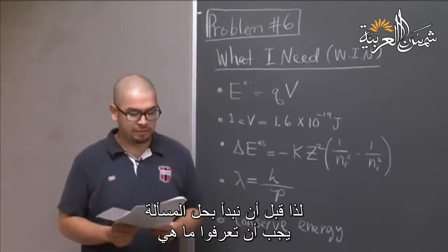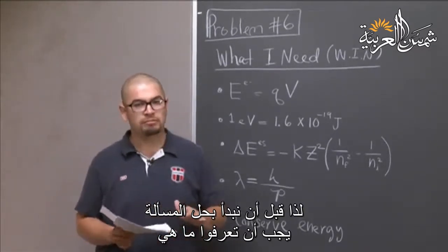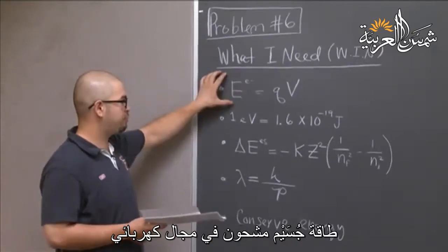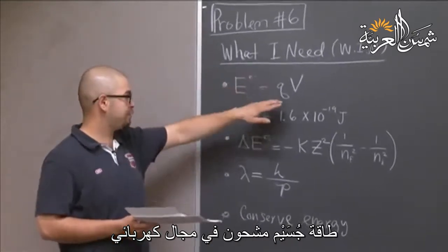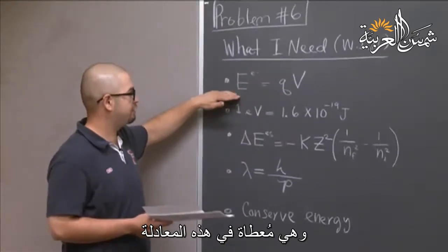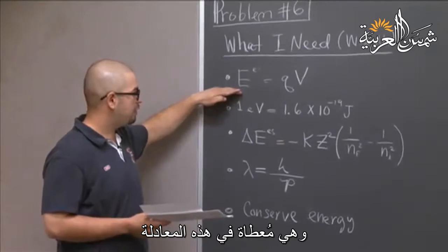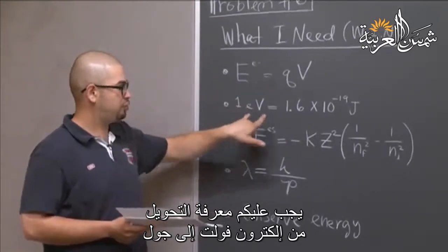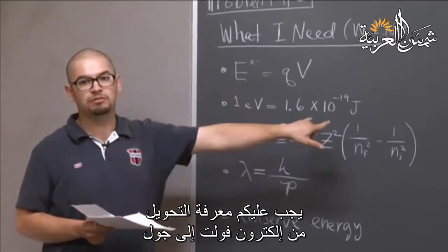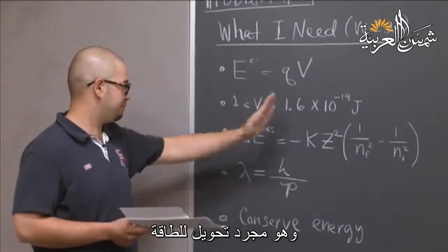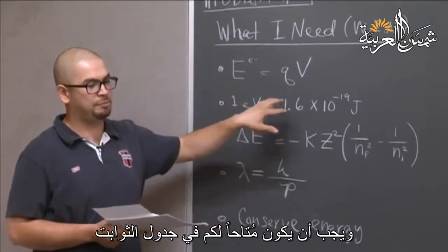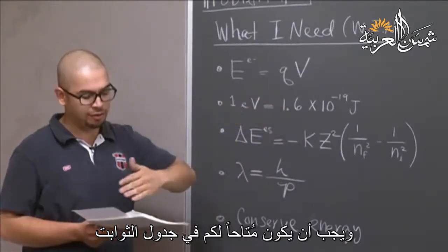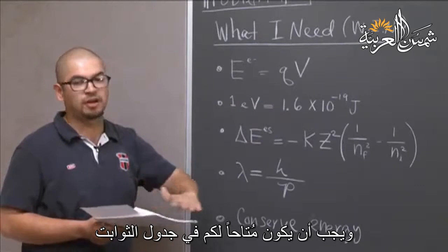Before you start the problem, you should know what the energy is of a charged particle in an electric field, which is given by this equation. You also need the conversion from an electron volt to a joule, which is just the conversion of energy, and this should be given to you on your table of constants.